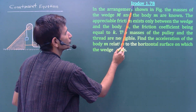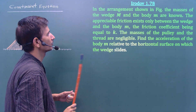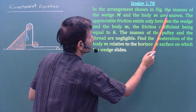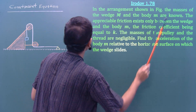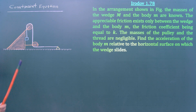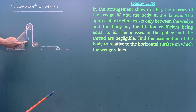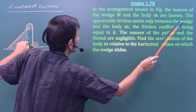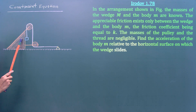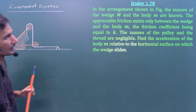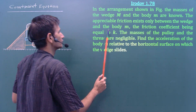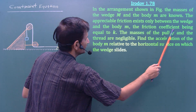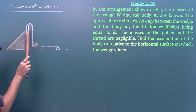Let us solve Irodov problem number 1.78, a very good problem of high standard. In the arrangement shown in the figure, the masses of the wedge M and the body m are known. This is a wedge having mass capital M and this is a block having mass small m. Appreciable friction exists only between the wedge and body m, with the coefficient of friction equal to k. The masses of the pulley and the thread are negligible.